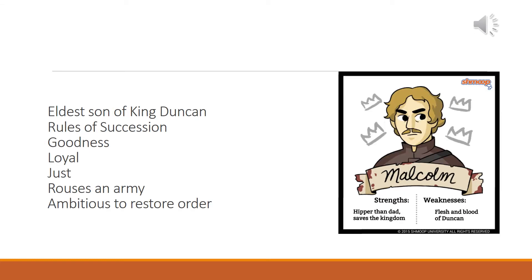Here we have Malcolm, the eldest son of King Duncan. There is another son, Donalbain, but shortly after the murder occurs he goes to Ireland and we don't hear from him again. Malcolm believes in the rule of succession — a king has a son, and the son becomes king in a long line of succession. When Macbeth suddenly becomes king, Malcolm has fled to England, first for his safety and later to raise an army against Macbeth. He believes in values of goodness, loyalty, and justice, and his ambition is not one of self-greed or power but to restore the natural order of succession — which he achieves at the end of the play.